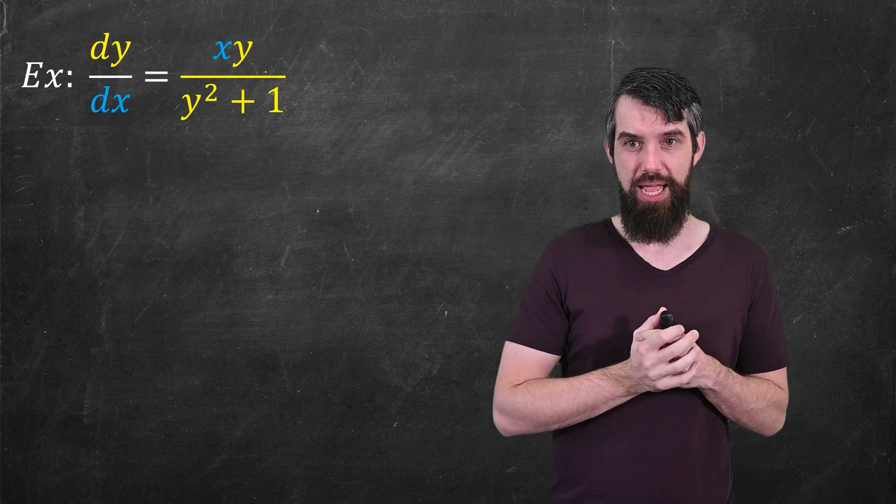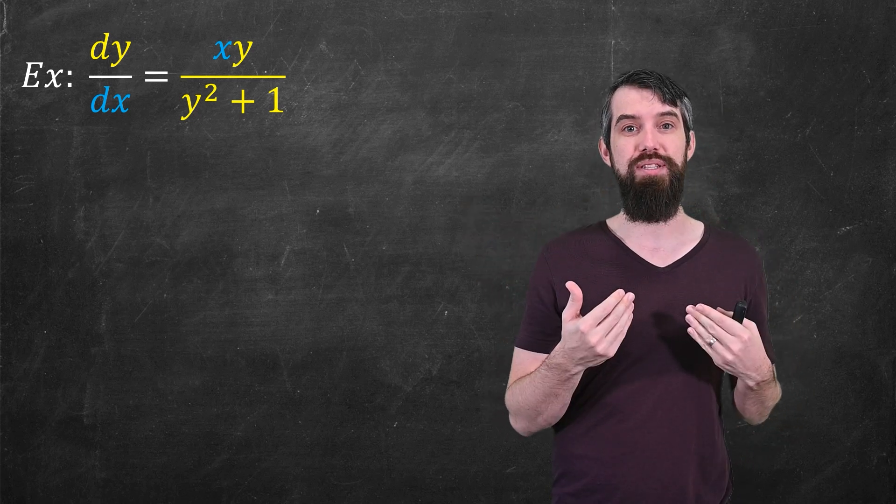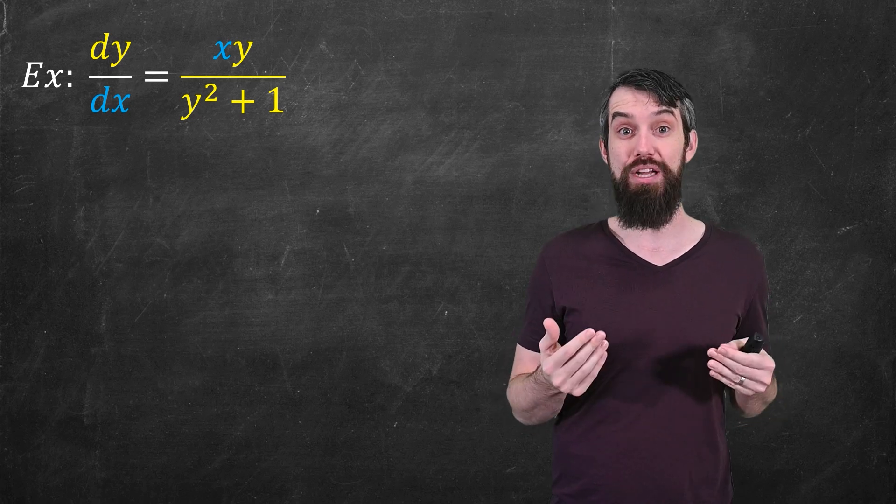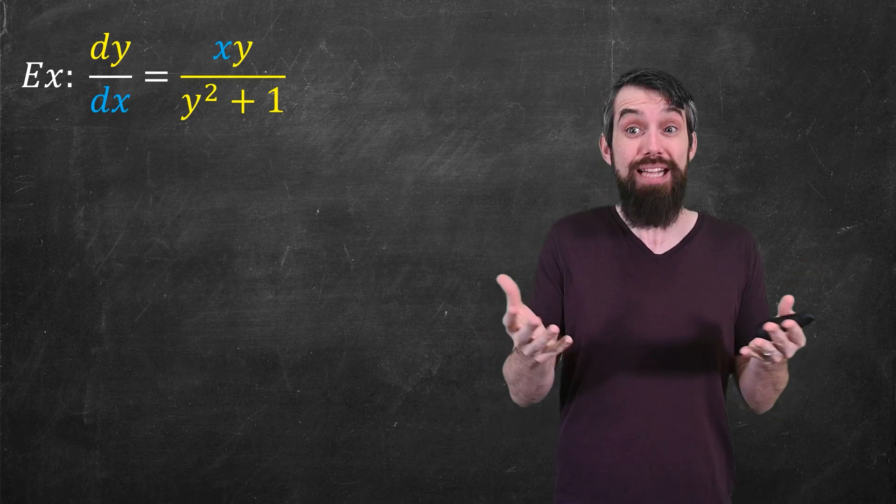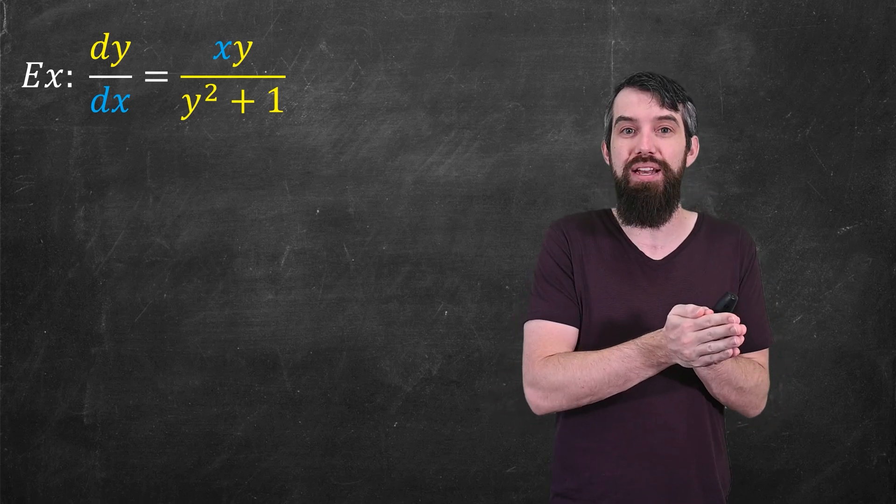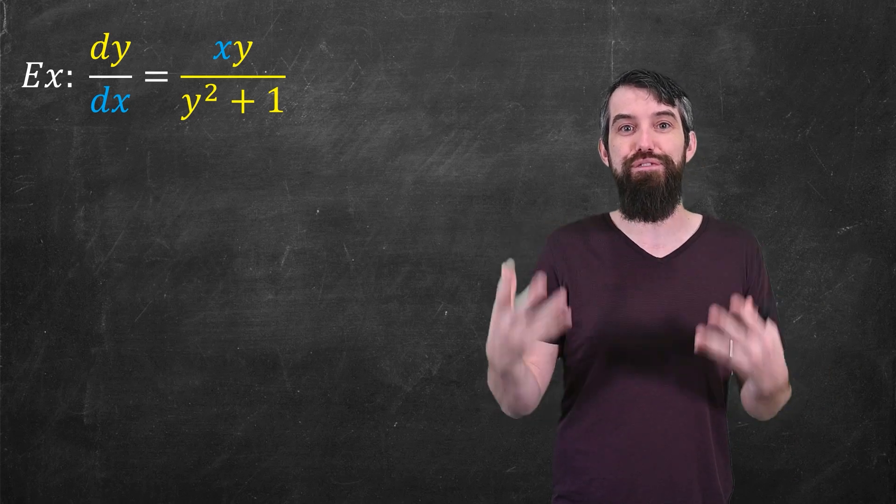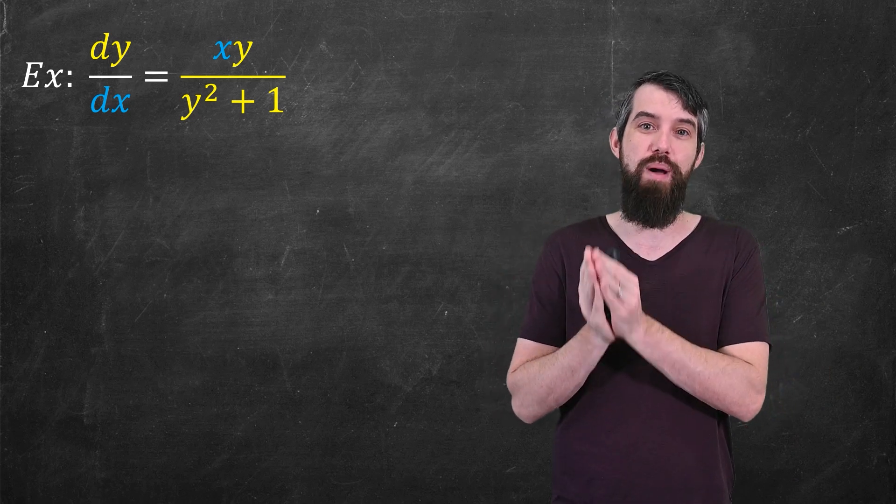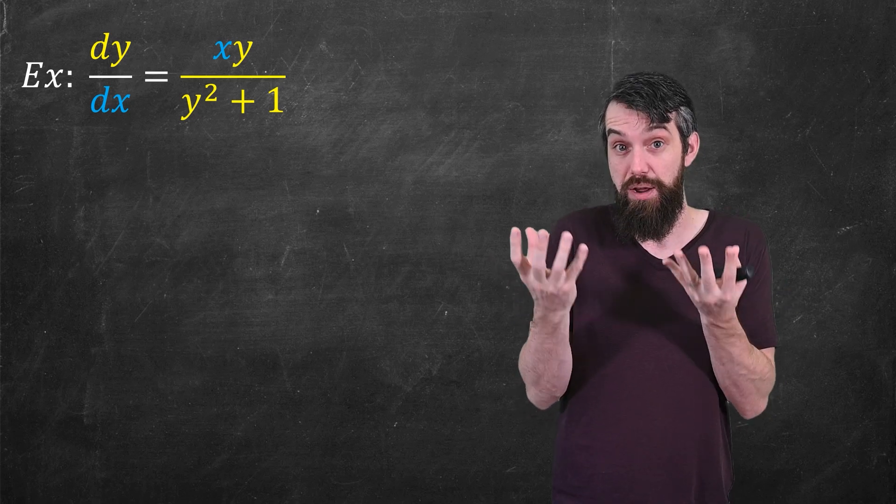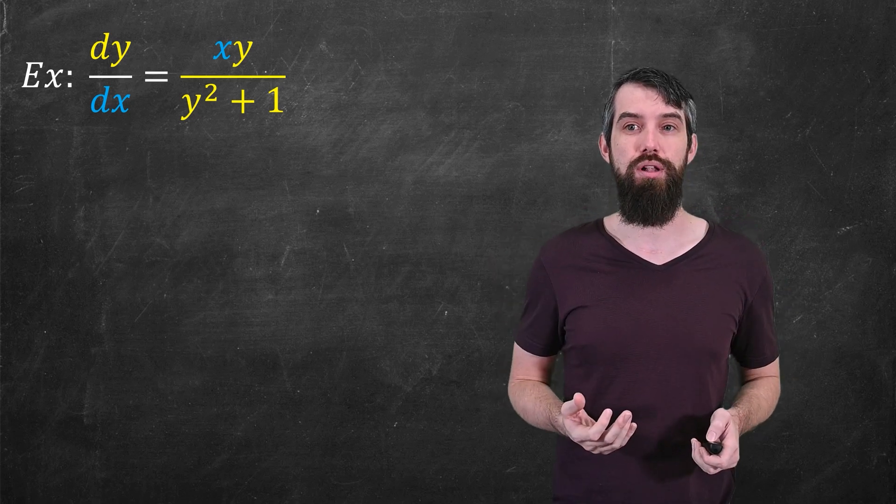Okay, so let's look at a slightly more interesting example here. This is now y prime equals xy divided by y squared plus 1. Our first question is, is it separable? And yes, it is. We have a portion which is just the x, and that is multiplied by a portion which is some function just of y, the y divided by y squared plus 1. It's a multiplication of these two separated components.